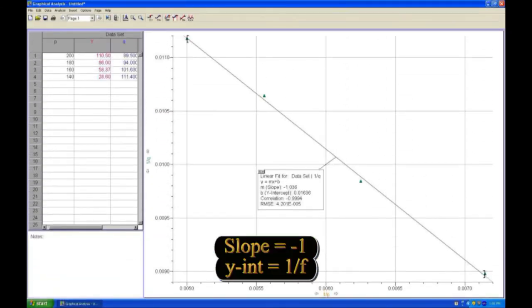A plot of 1 over q versus 1 over p should again be a straight line with a slope of negative 1 and a y-intercept equal to the inverse of the focal length of the mirror.